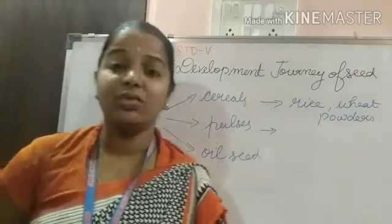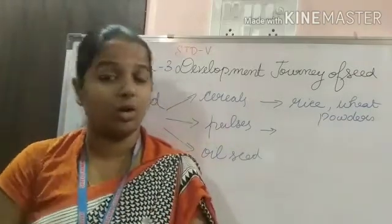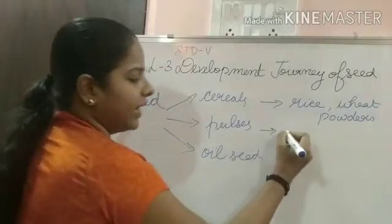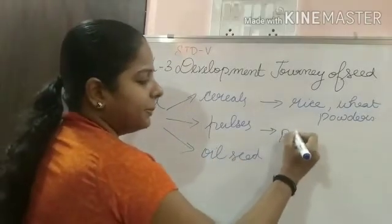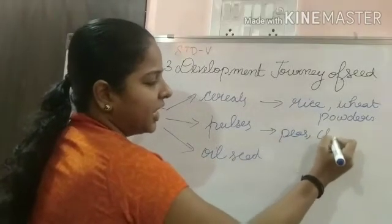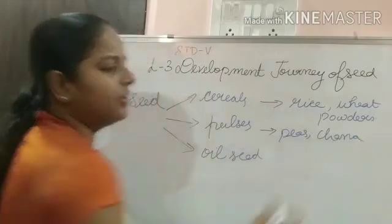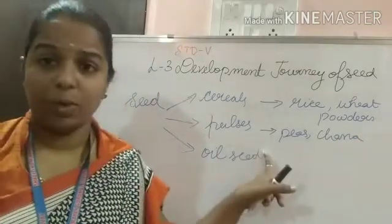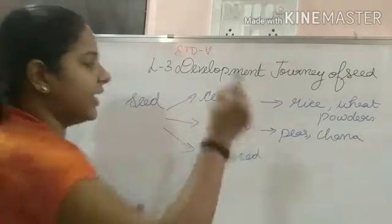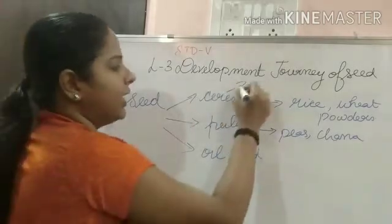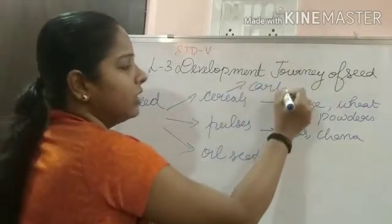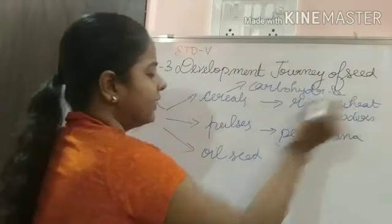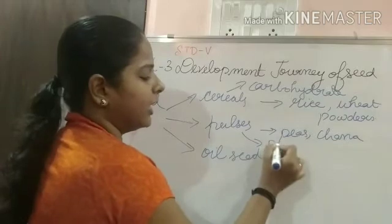Next is pulses. Pulses are seeds that when you divide them, they split into two equal halves. Examples of pulses are peas and chana. Pulses contain protein, whereas cereals contain carbohydrates.